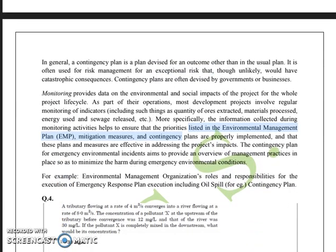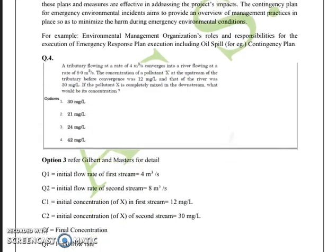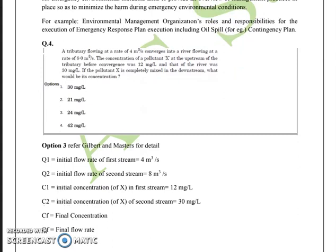Here we have mentioned the details that what a contingency plan in EIA. It is devised of an outcome other than the usual plan and it is often used in the risk management part also. Now, let us move to one of the technical question which is question number 4.